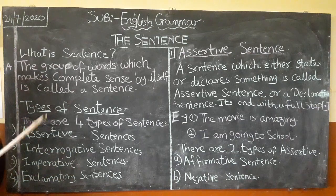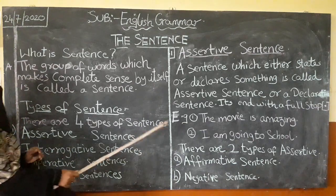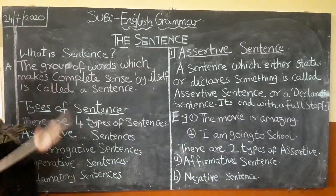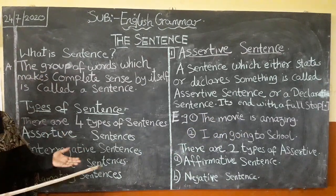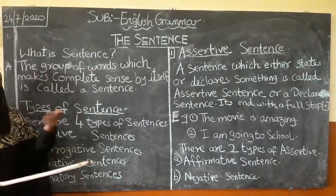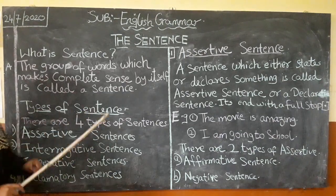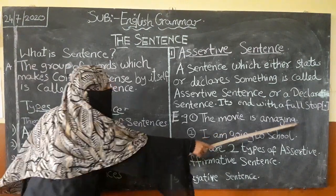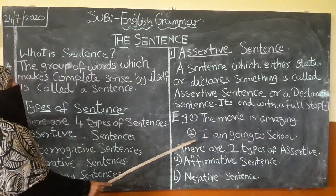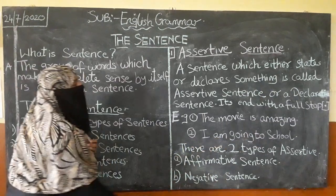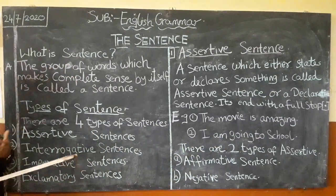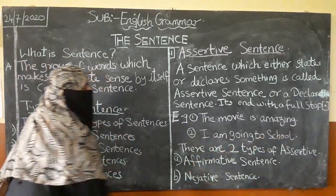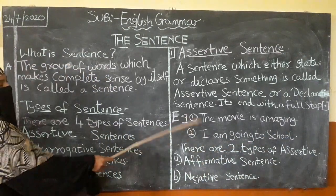Here is an example: 'The movie is amazing.' This is a statement — you are telling something about the movie, and it ends with a full stop, making it a complete sentence. Second example: 'I am going to school.' This is declarative — you are declaring what you are doing, and it also ends with a full stop.